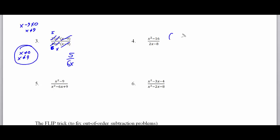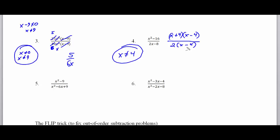Problems 4, 5, and 6 all require factoring skills. Problem 4's first pattern is a difference of squares — they're being subtracted, and both terms are perfect squares: x squared roots to x and x, and 16 roots to 4 and 4. The difference of squares pattern factors as (x plus 4)(x minus 4). In the denominator, factor out a 2, which leaves x minus 4, giving danger number x ≠ 4. After simplification, x plus 4 over 2 is our final answer.